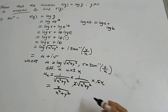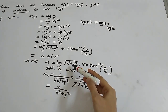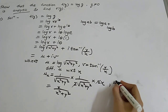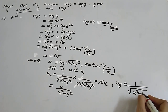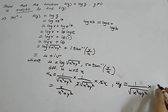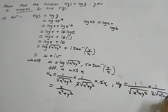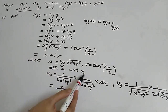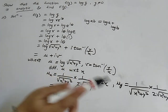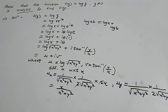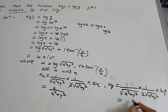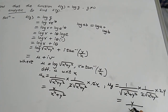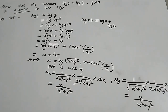Now we differentiate u partially with respect to y. So u_y = 1/√(x² + y²) · 1/(2√(x² + y²)) · 2y, which equals y/(x² + y²). So u_x and u_y values are found.